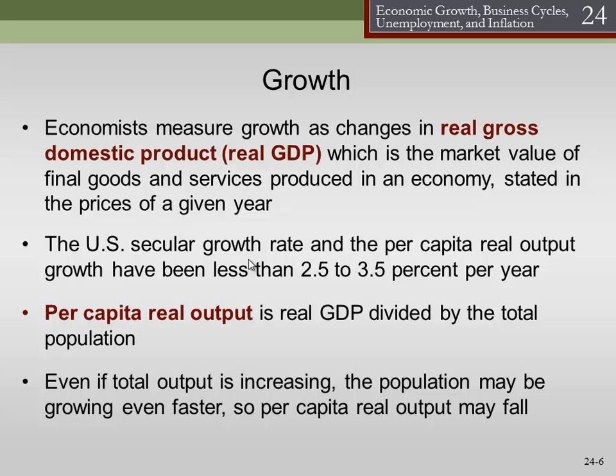Even if total output is increasing, the population may be growing faster, so per capita real output may fall. So if we add more people than we add production, overall there's less stuff per person.